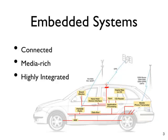Embedded systems control so many devices in common use today. They range from portable devices such as digital watches and MP3 players to large stationary installations like ATM machines. Their complexities vary on a large scale — some systems have real-time performance constraints for safety and usability, while others allow hardware to be simplified to reduce costs. Modern embedded systems are largely connected, media-rich, and highly integrated, with nearly all including IP networking stacks and wired and wireless network interfaces.